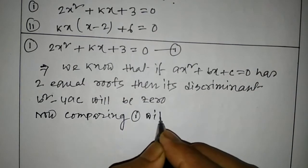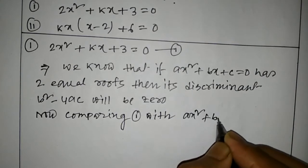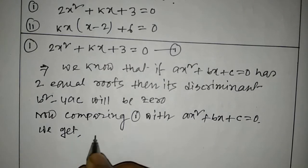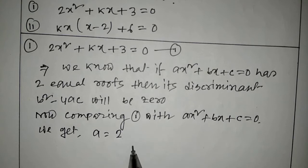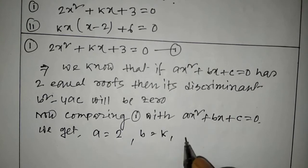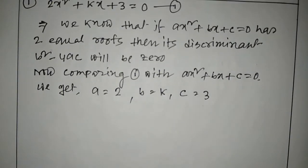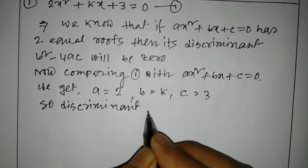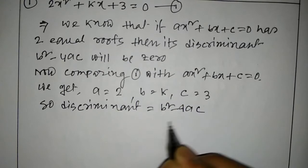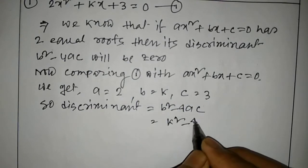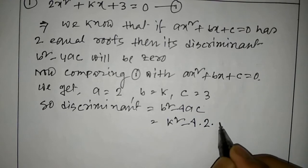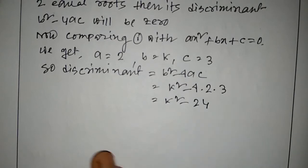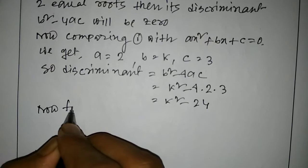Now we take equation number 1. Comparing with ax squared plus bx plus c equals 0, we get a equal to 2, b equal to k, c equal to 3. So discriminant equals b squared minus 4ac, which is k squared minus 4 into 2 into 3, giving k squared minus 24.